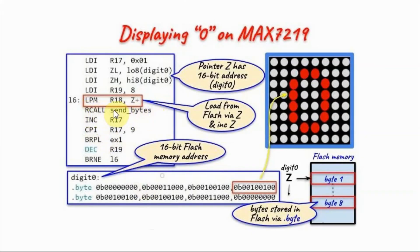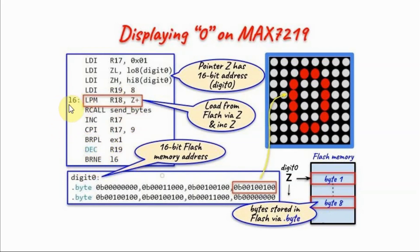We call subroutine send_bytes to transmit the values of R17 (command byte) and R18 (data byte). Then we increment R17 to address digit 2, and compare R17 with 9 to check if all digits have been covered. If not, the skip instruction is not taken, we decrement counter R19, jump back to label L6, and repeat the process. This loops 8 times until all patterns have been sent to the MAX7219 display.